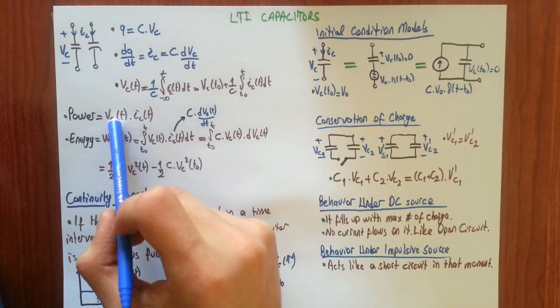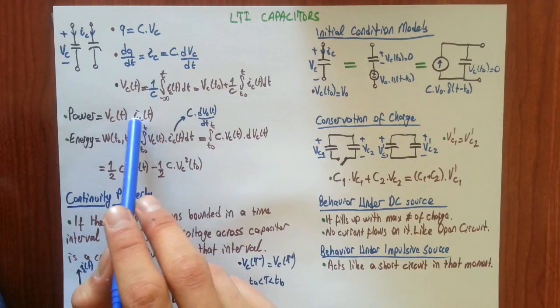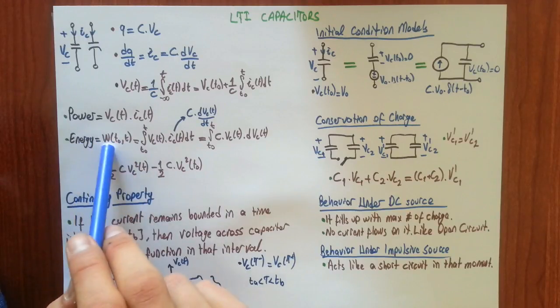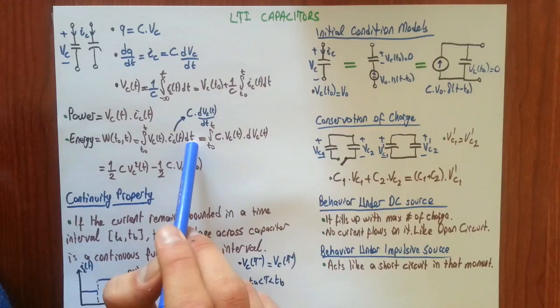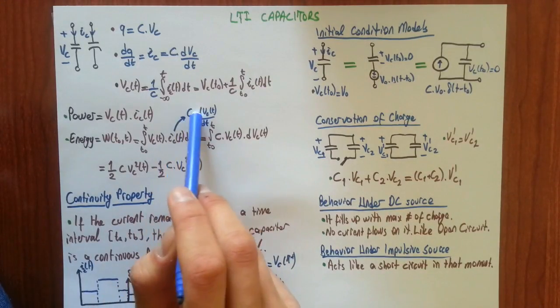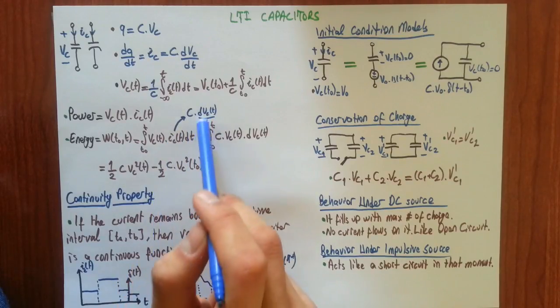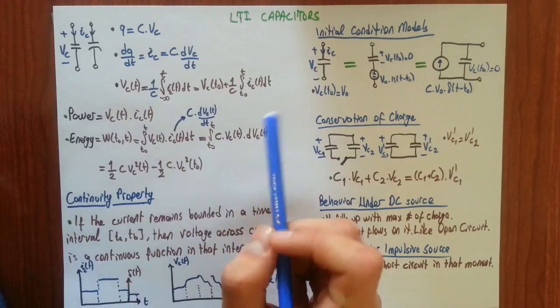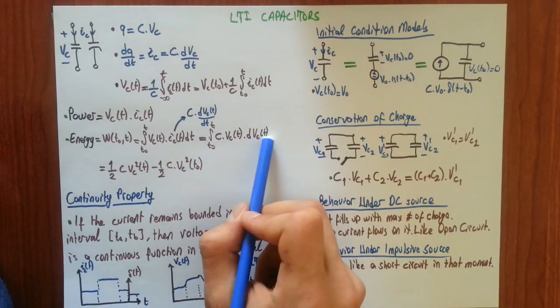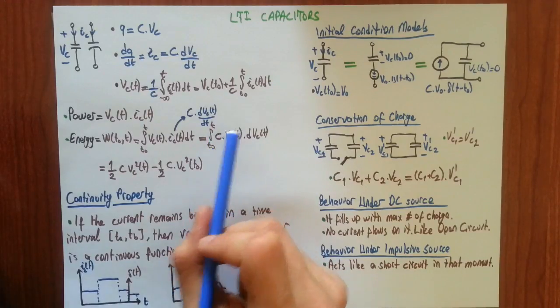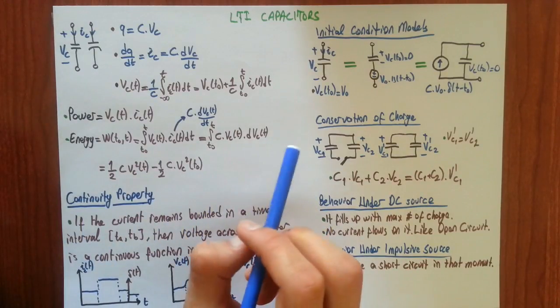Power of the capacitor is very straightforward: you will simply multiply voltage across it by current through that. Time integral of power is energy. If you want to find energy of capacitor between time T0 and T, you integrate from T0 to T: Vc, Ic, and DT. What you know about Ic is that it's C times DVc over DT. If you write this for Ic, DT cancels out and you have C times Vc, integrating with respect to Vc. The result is the famous one-half C times Vc squared.